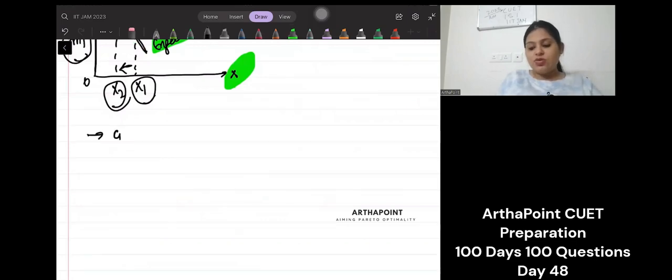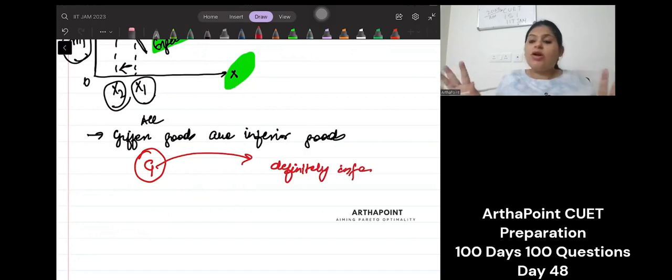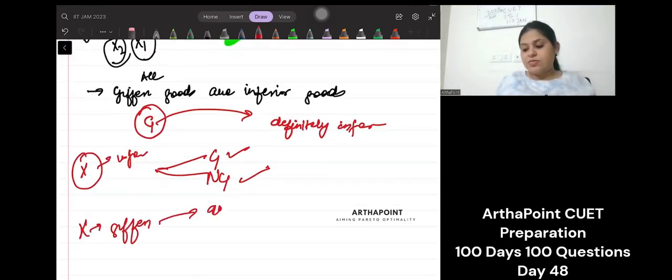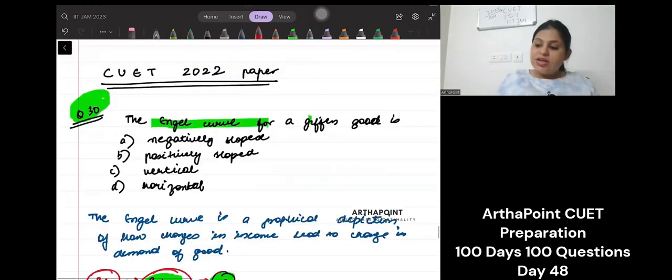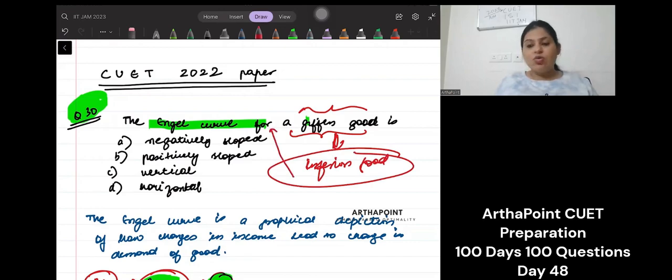Let's write down that Giffen goods are, all Giffen goods are inferior goods. If a good is Giffen, then it is definitely inferior. All inferior are not Giffen. Suppose I say good X is inferior. It can be Giffen, it cannot be Giffen. But if I say good X is Giffen, then it is definitely inferior. If a good is a Giffen good, if the question is asking about a Giffen good, it means that good is also an inferior good for sure.